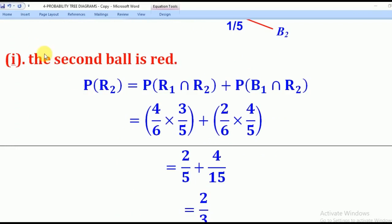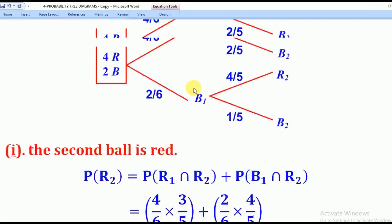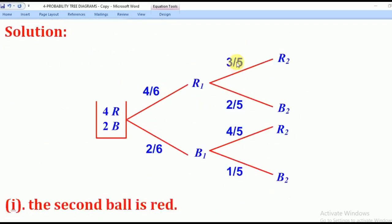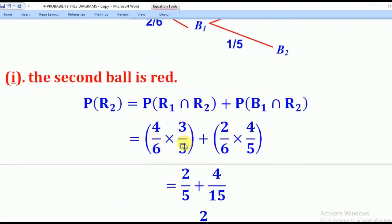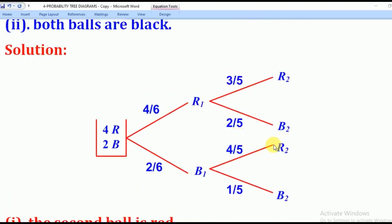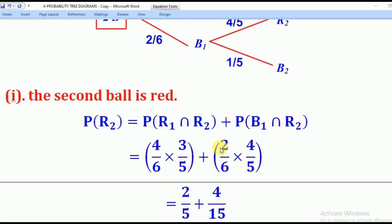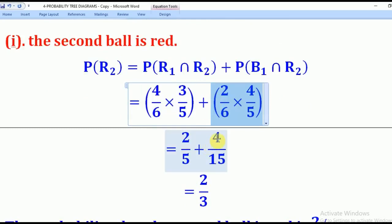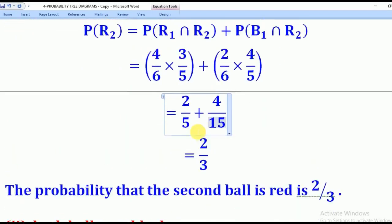Roman 1: the probability that the second ball is red. Second ball red comes from path red-then-red: four over six times three over five, and from path black-then-red: two over six times four over five. Multiplying: four over six times three over five gives two over five; two over six times four over five gives four over fifteen. Adding the two gives two over three — that is the answer.